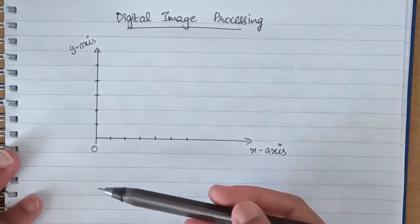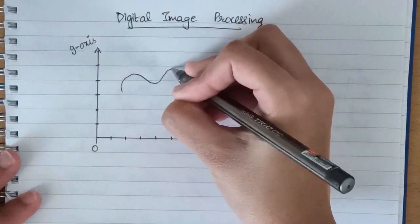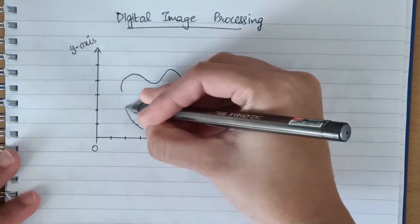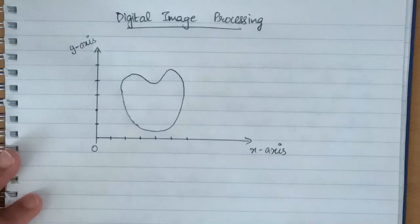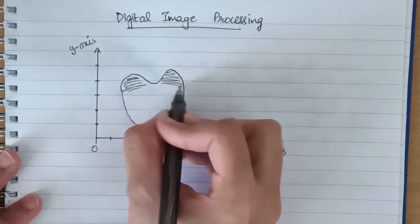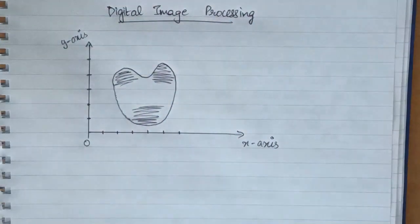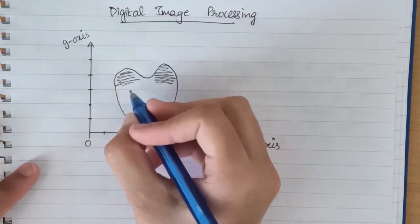We have an x and y coordinate system here. Suppose we draw an image which kind of looks like an apple. Now we'll draw the darker regions of this image with black and the lighter regions with blue.